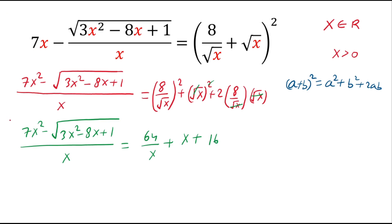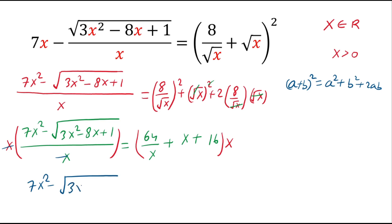Now if we multiply both sides by x, on the left hand side the x in the denominator cancels, giving 7 times x squared minus square root of 3 times x squared minus 8x plus 1. On the right hand side, multiplying x inside the bracket: 64 over x times x gives 64, plus x times x is x squared, plus 16 times x.